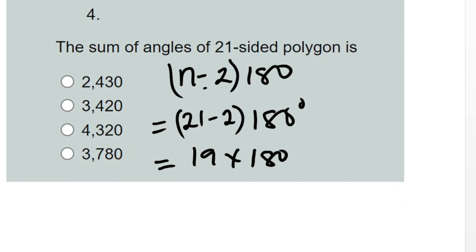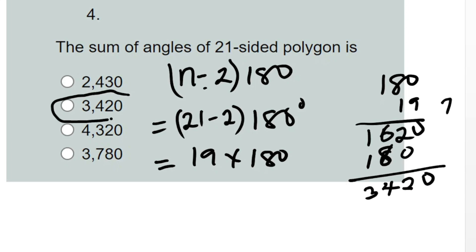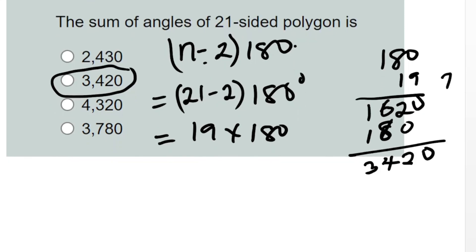That gives us 19 times 180 degrees. Multiplying 180 by 19 gives us 3420 degrees, which corresponds to option I. That is very clear.